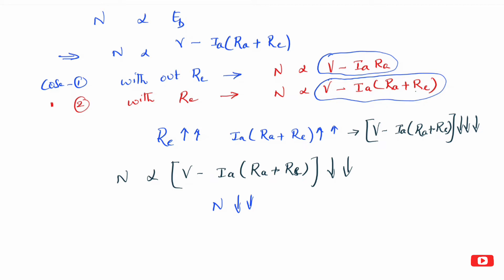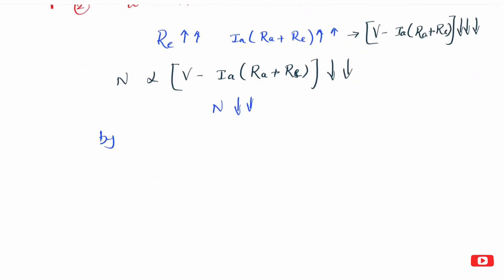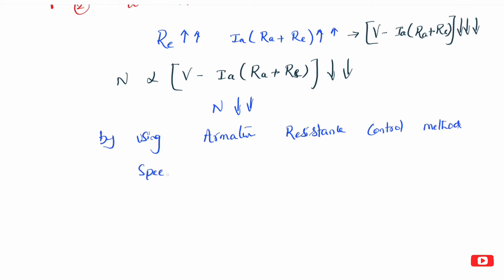So by using the armature resistance control method, we can control the speed. Speed can be varied below rated speed. In field control, speed can be varied above rated speed. But in armature resistance control method, speed decreases — so we can control speed only below the rated value.